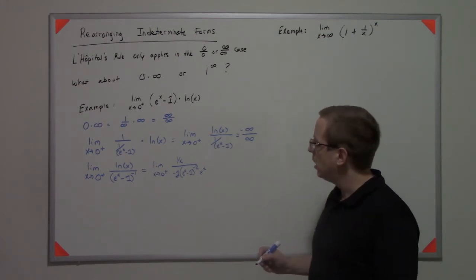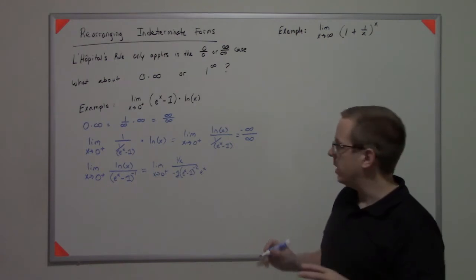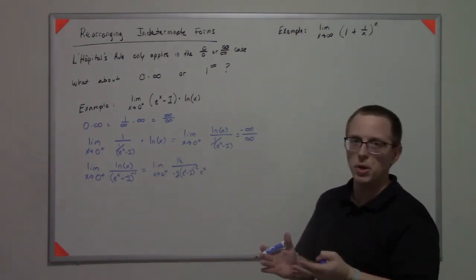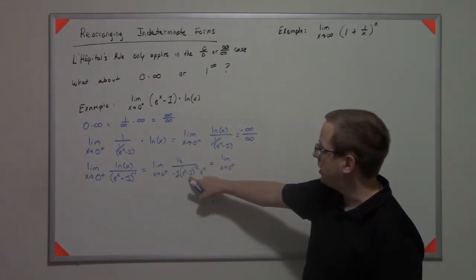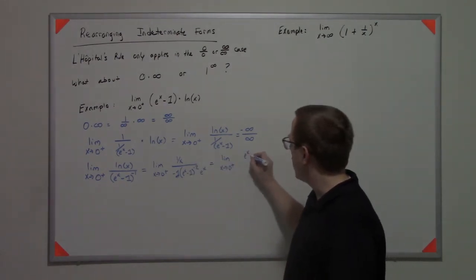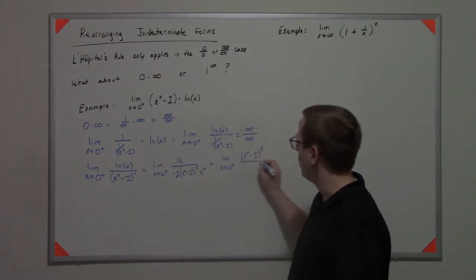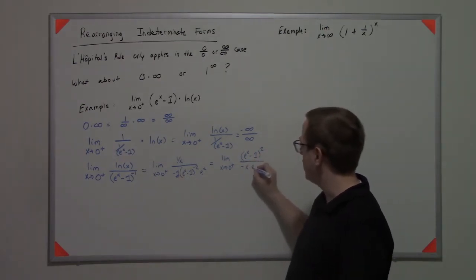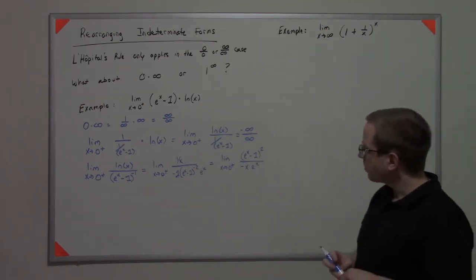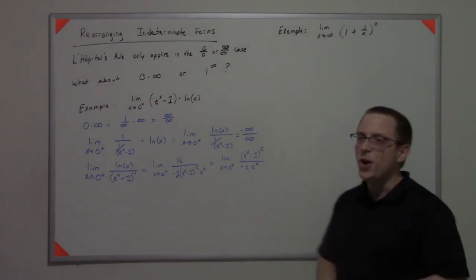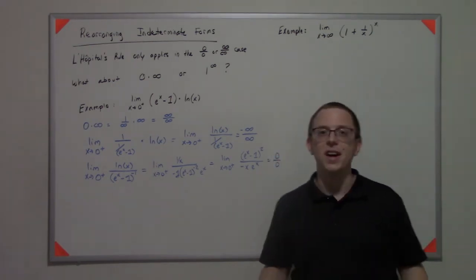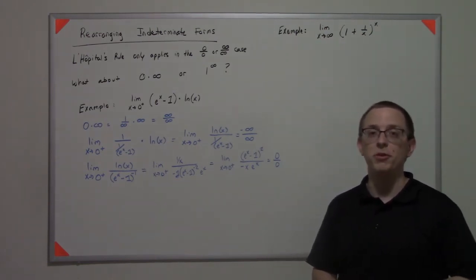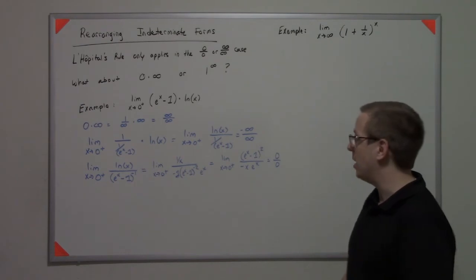Cleaning all this up, we get the limit as x approaches 0 from the positive side of (e^x - 1) squared over negative x times e^x. If you plug in 0 here, you actually get a 0 over 0, which is not helpful. So we're going to have to apply L'Hôpital's rule one more time to see if we can get something useful.